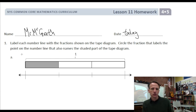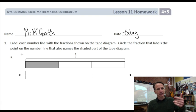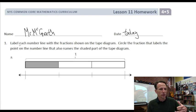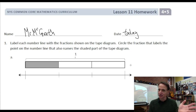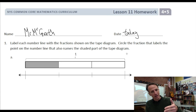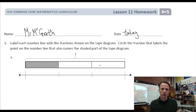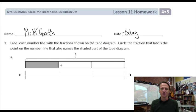Our instructions here — I think this is going to be one of those faster homework nights — are to label each number line with the fraction shown on the tape diagram. Here's your number line, and you see how it aligns with the tape diagram. Circle the fraction that labels the point on the number line that also names the shaded part of the tape diagram. Let's just jump right in.